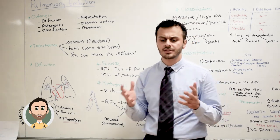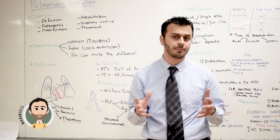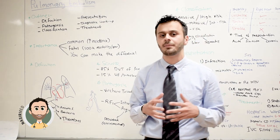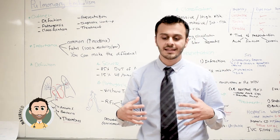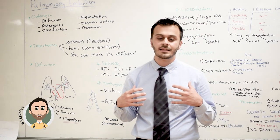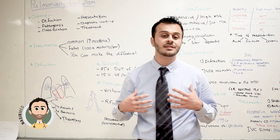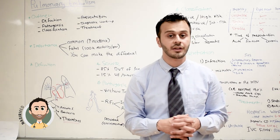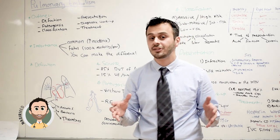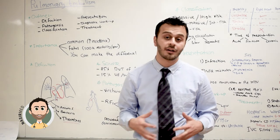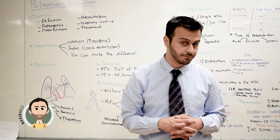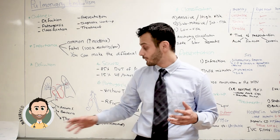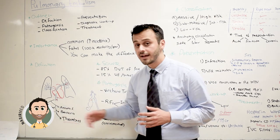Let's start our presentation by defining pulmonary embolism. Basically, it's a term used to define any obstruction of the pulmonary artery by a material that originated somewhere else in the body. This material could be made of, for example, fat.